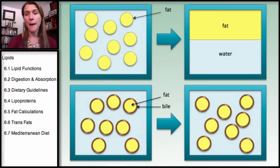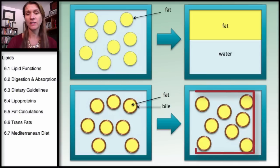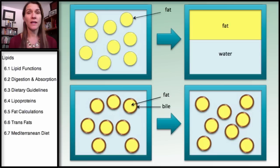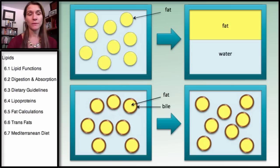So this fat is able to travel very easily in water. It allows a bunch of little tiny fat droplets to travel in water, and it can actually form a suspension, or what they call an emulsion. So as far as digestion and absorption, bile aids in both the digestive process — making it easier for enzymes to digest the fat — but also aids in absorption.